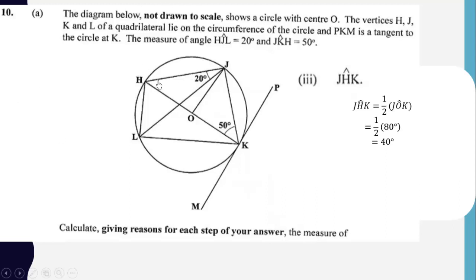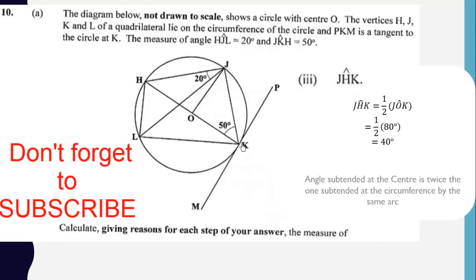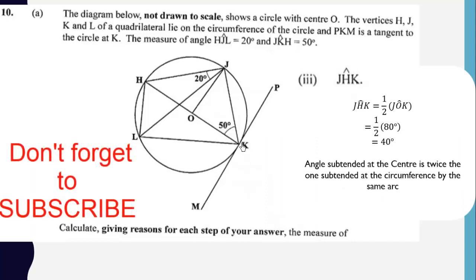Note that this angle should equal the other angle because they are also in the same segment, created by the same arc JK. The reason is that the angle subtended at the center is twice the angle subtended at the circumference by the same arc JK.